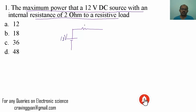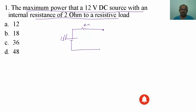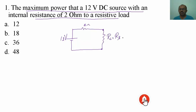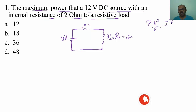What is the value of resistance under maximum power transfer? The load resistance RL should be equal to the source resistance, which equals 2 ohms. Now if I want to calculate the value of power, power is given by V squared divided by R, or I squared times R, or one more expression: V times I.